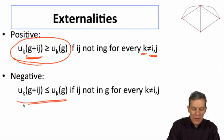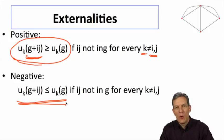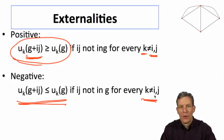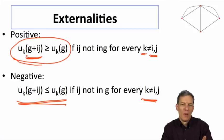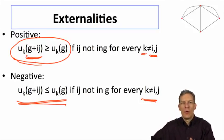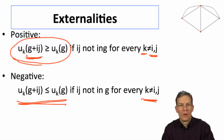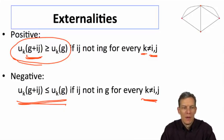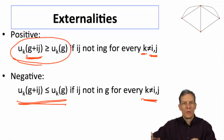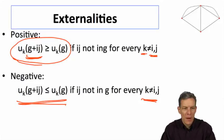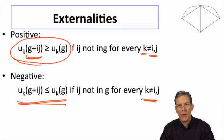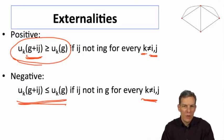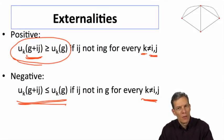Negative externalities is exactly the opposite — a situation where if two people add a link, the other individuals are hurt by that. This can come about in different settings where now I'm losing time with friends, or if you're a company and two other companies merge or form some sort of alliance, that might hurt your ability to compete with them. So we can think of situations where ties among other individuals are detrimental to a given individual.